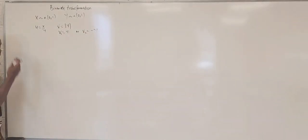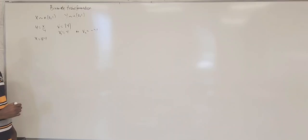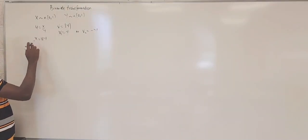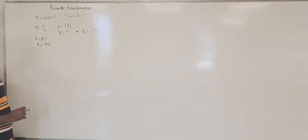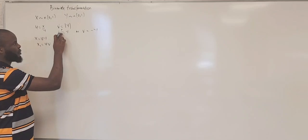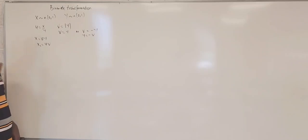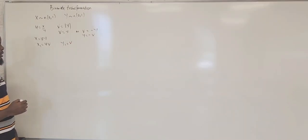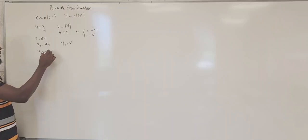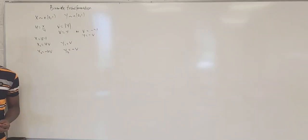Now if v is positive y, you know from here you have x equals uv. So if v is positive y, your x1 is going to be uv. Here you have y equal to negative v, so your x1 is uv while y1 is v. Now for the second case, your x2 is going to be negative uv and your y2 is going to be negative v.